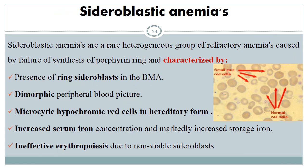Sideroblastic anemia: hemoglobin is composed of heme and globin; if a defect occurs in protoporphyrin synthesis, this produces sideroblastic anemia. Sideroblastic anemias are a rare heterogeneous group of refractory anemias characterized by failure of protoporphyrin synthesis. In bone marrow aspirate, ring sideroblasts are seen. There is a dimorphic picture of RBCs: one population of small microcytic hypochromic RBCs and another of normocytic normochromic RBCs. Serum iron concentration is elevated, and there is increased storage of iron. Sideroblastic anemia involves ineffective erythropoiesis due to non-viable sideroblasts.